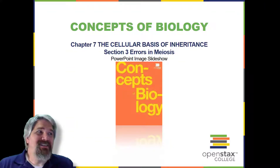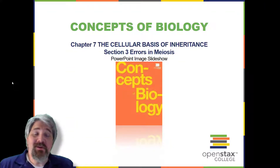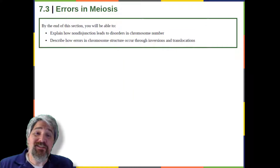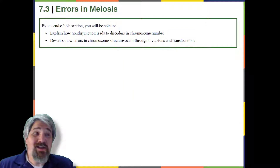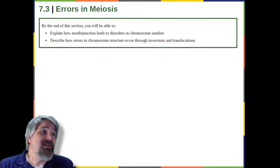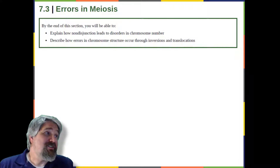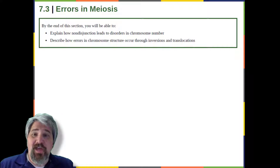Welcome back to Chapter 7. This is Section 3, Errors in Meiosis. By the end of this section, you will be able to explain how non-disjunction leads to disorders in chromosome number, and describe how errors in chromosome structure occur through inversions and translocations.